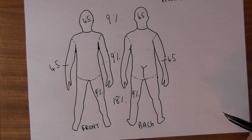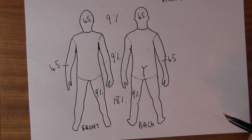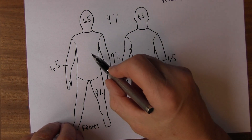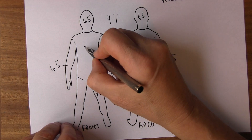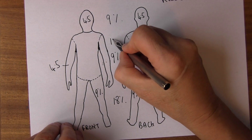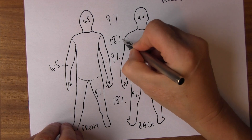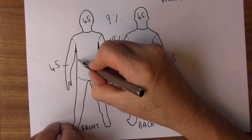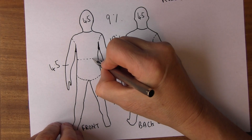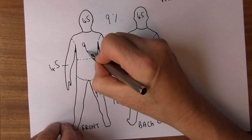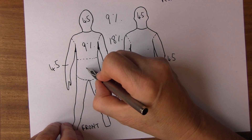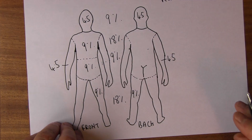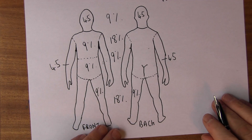Now the torso at the front is going to be 18% — the whole torso, 18%. So half a torso is going to be 9%. So the chest is 9% and the abdomen is 9%.